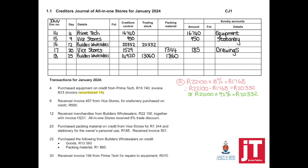Then day 50: received invoice 156 from Prime Tech for repairs to equipment, 570. We start with document number 19, day 50. Who do we owe? Prime Tech. How much? 570. For what reason? It says repairs to equipment, so it must be shown as repairs.